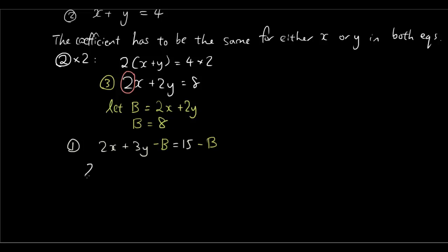Then it becomes 2x plus 3y minus B which is 2x plus 2y on the left equals 15 minus 8 which is B is also equal to 8. And now as you can see we have brackets here which we need to expand so it becomes 2x plus 3y minus 2x minus 2y equals 15 minus 8 which is 7.